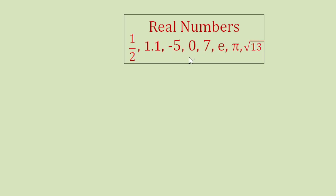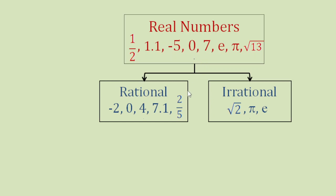Real numbers can be classified into two: rational numbers and irrational numbers. So this means rational numbers and irrational numbers are subsets of real numbers. Examples of irrational numbers are a number inside a square root sign, pi, and e.